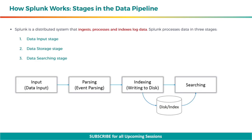Let's discuss how Splunk works, that is the stages in the data pipeline. Splunk is a distributed system that ingests, processes and indexes log data. Splunk processes data in three stages: the data input stage, data storage stage, and data searching stage.